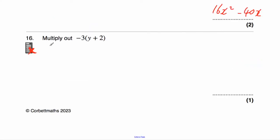Question number sixteen asks us to multiply out −3(y + 2). We need to multiply what's inside the brackets by negative three. Negative three times y would be negative 3y. Then negative three times two would be negative six, so minus six. The answer is −3y − 6. This question was a little different because we had negative three in front — a negative times a positive is a negative.